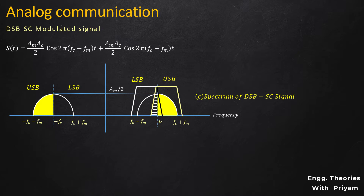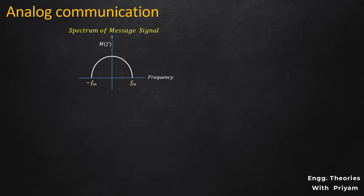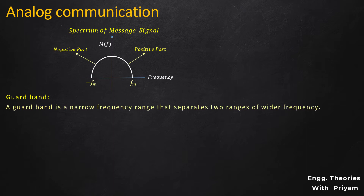So the recovery of the SSB-SC modulated signal from the DSB-SC modulated signal is not possible without having noise or a part of the other sideband along with it, which is not desired. In order to solve this problem, we need to make some changes in our message signal or modulating signal. Let's understand it graphically. The message signal in the frequency domain contains both positive and negative parts, and we need to separate these parts using a guard band.